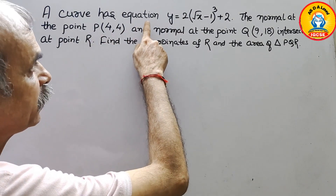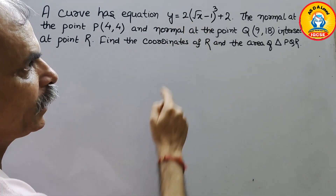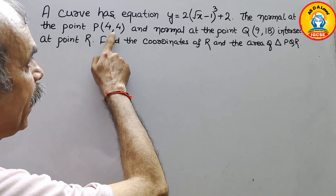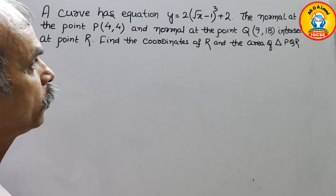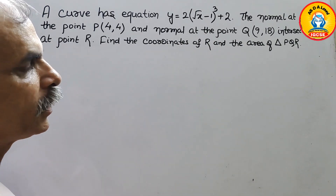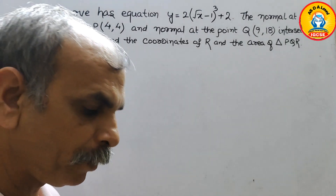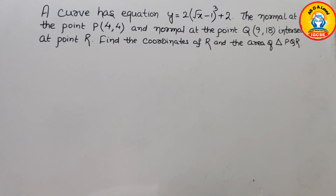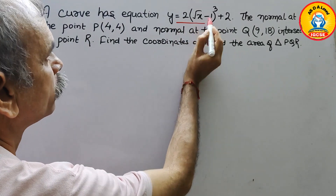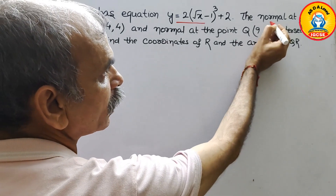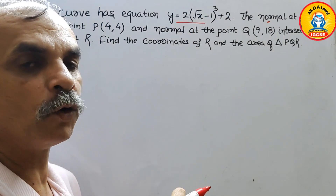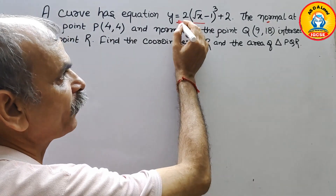The question is: a curve has equation y = 2(√x - 1)³ + 2. The normal at the point P(4, 4) and the normal at point Q(9, 18) intersect at point R. Find the coordinates of R and the area of triangle PQR. To solve this, we need to find the differentiation of the curve and then find the gradients.